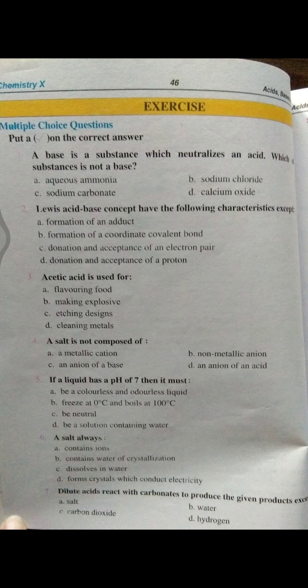Question 5: If a liquid has a pH of 7, then it must be — the right answer is C(B): neutral. Question 6: A salt always contains ions. Question 7: Dilute acids react with carbonates to produce the given products except D — hydrogen. Question 8: In the preparation of insoluble salts, which one of the following facts is incorrect? Answer: B — two soluble salts are produced.